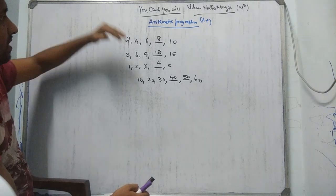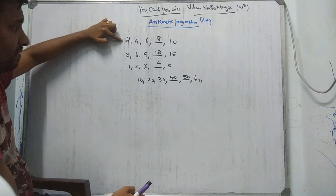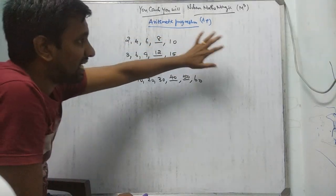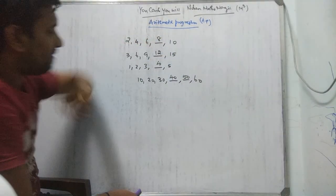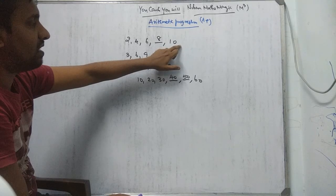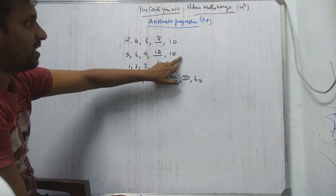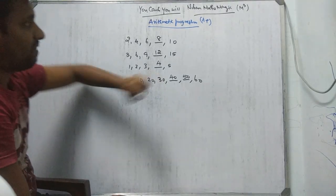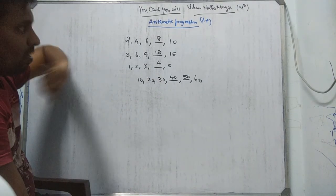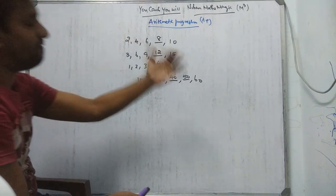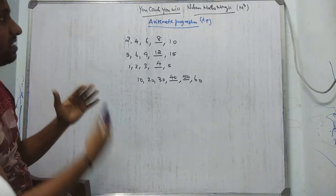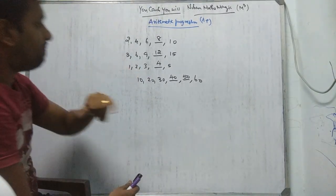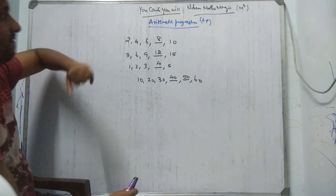Suppose I give you the sequence: 2, 4, 6, 8, 10. What may be the hundredth term? If I ask you the next term, I'll tell you 12. If I ask the next after that, 18. But if I ask what may be the hundredth term, the 20th term, the 15th term — this is the first part of arithmetic progression.